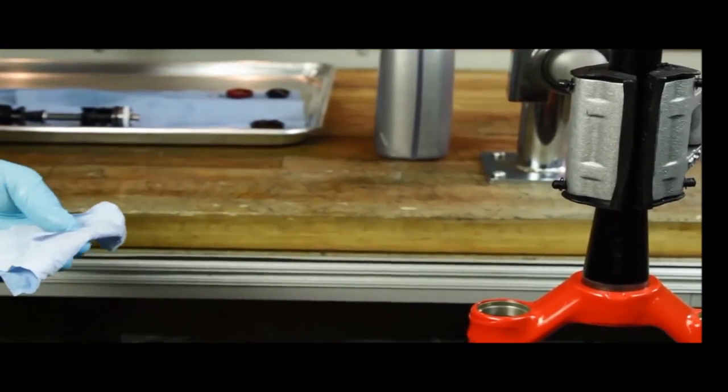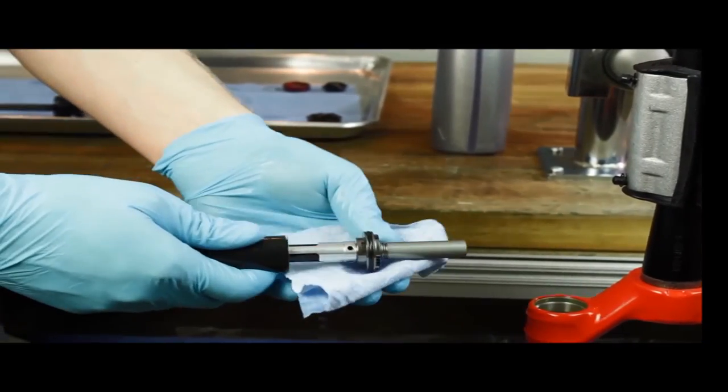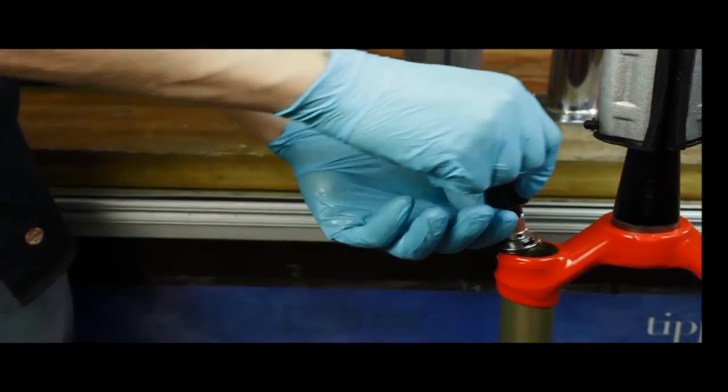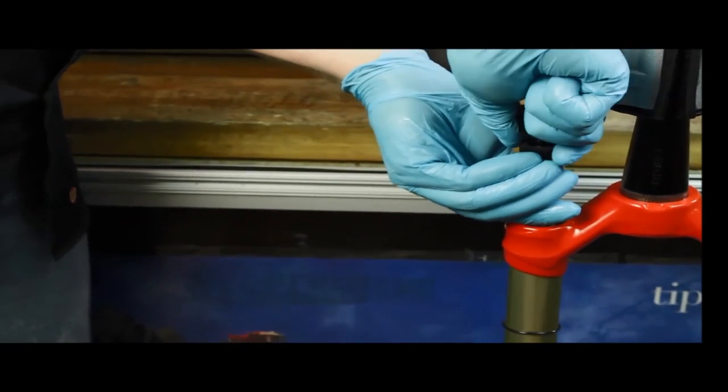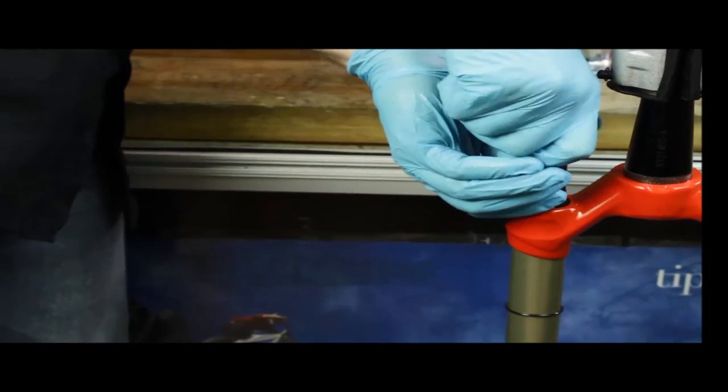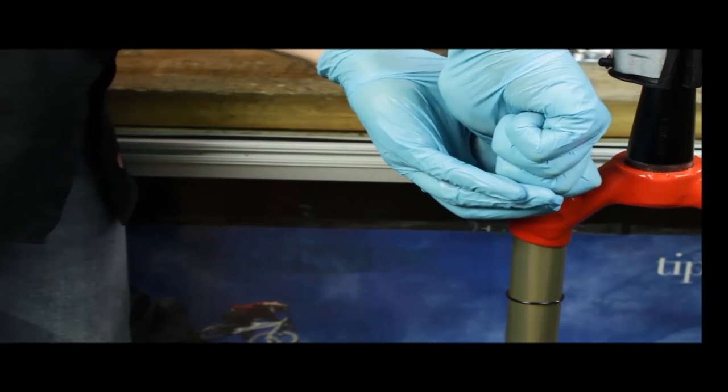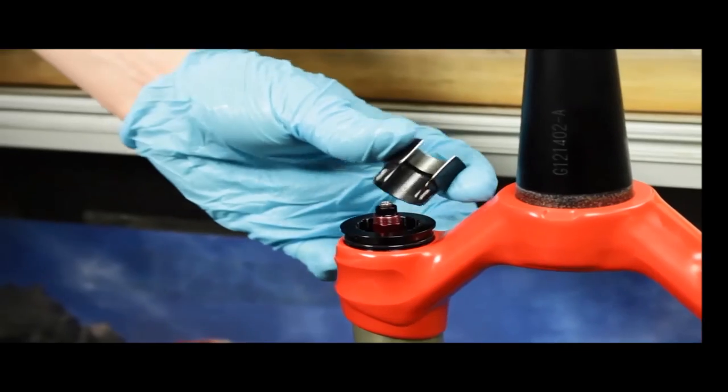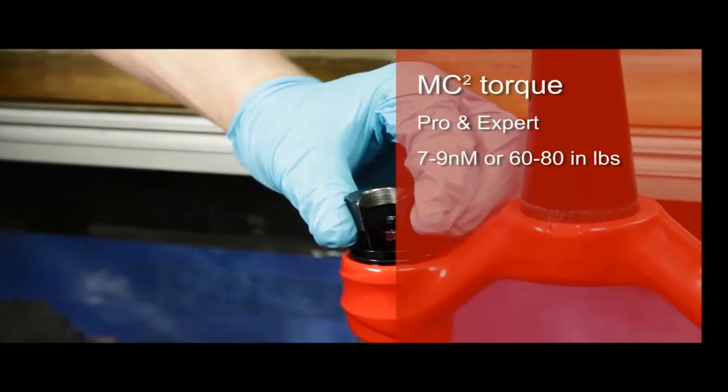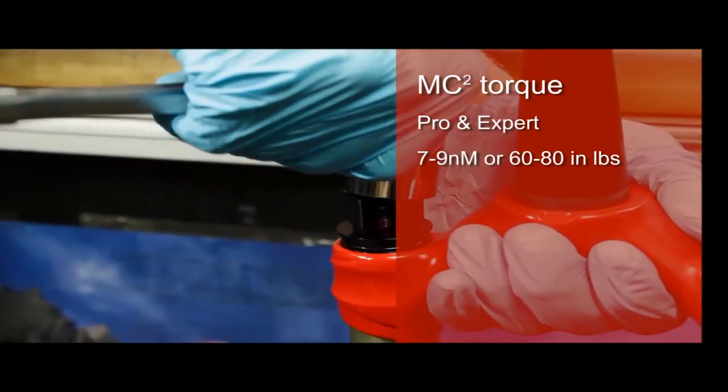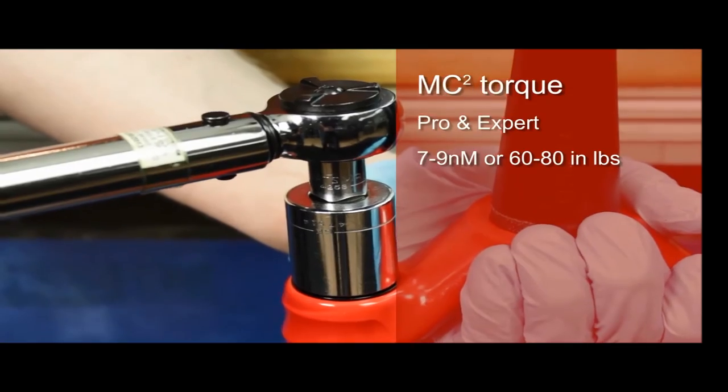Prepare the MC squared compression damper by lubricating the initial seal. Force the MC squared compression damper straight down with rotational motion until it reaches the threading of the top cap. Tighten down the compression rod cap to a torque of 7 to 9 newton meters or 60 to 80 inch pounds.